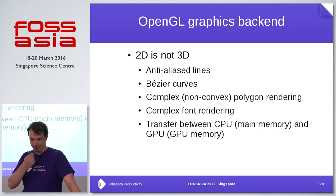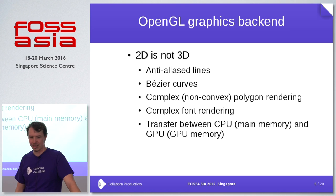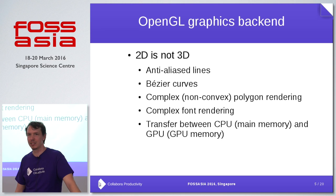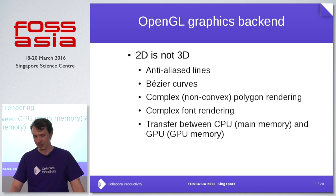The last problem is the transfer between CPU and GPU. You have to be very careful — any transfer costs time and memory, so you have to optimize it to the minimum.